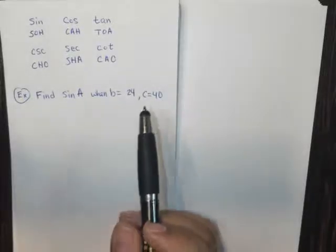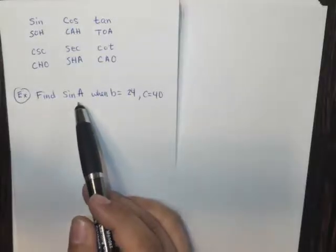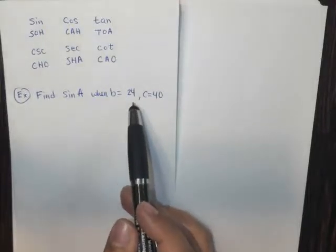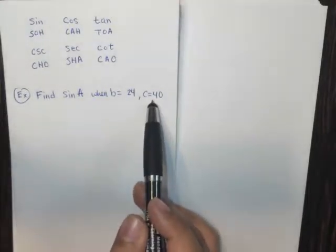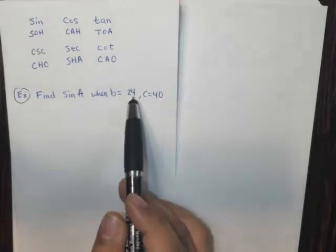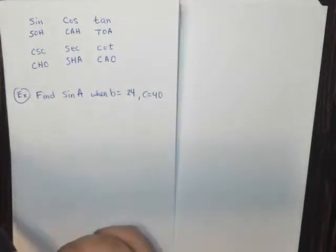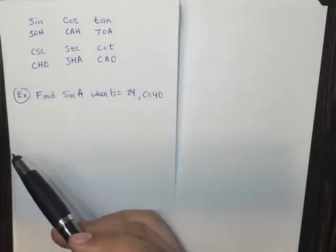In the following example, we are asked to find the sine of an angle A when B equals 24 and C equals 40. So these right here are side lengths. So they're giving us the side lengths of some triangle.